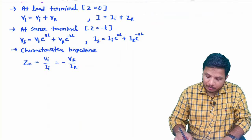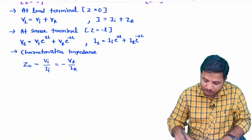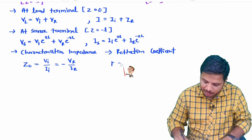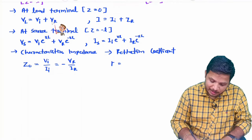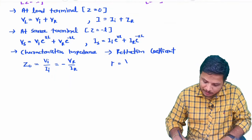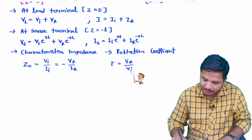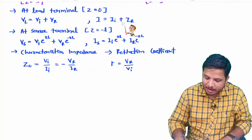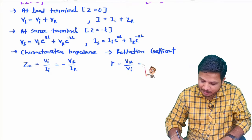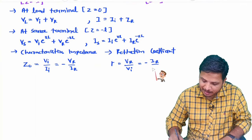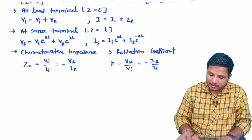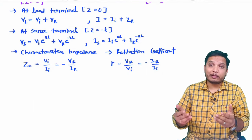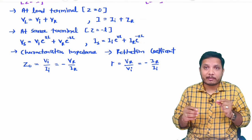Now the reflection coefficient: it is defined as reflected voltage divided by incident voltage, so ρ = Vr / Vi. In terms of current, it will be ρ = −Ir / Ii. These two basic definitions must be kept in mind when calculating characteristic impedance and reflection coefficient.